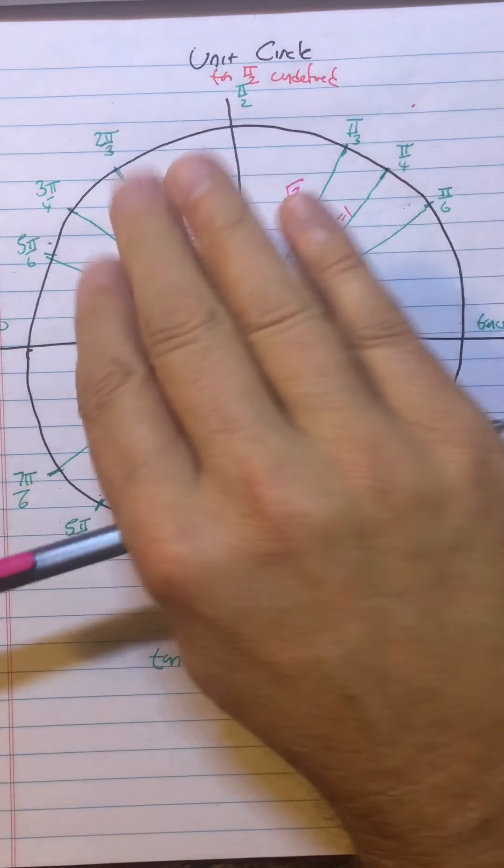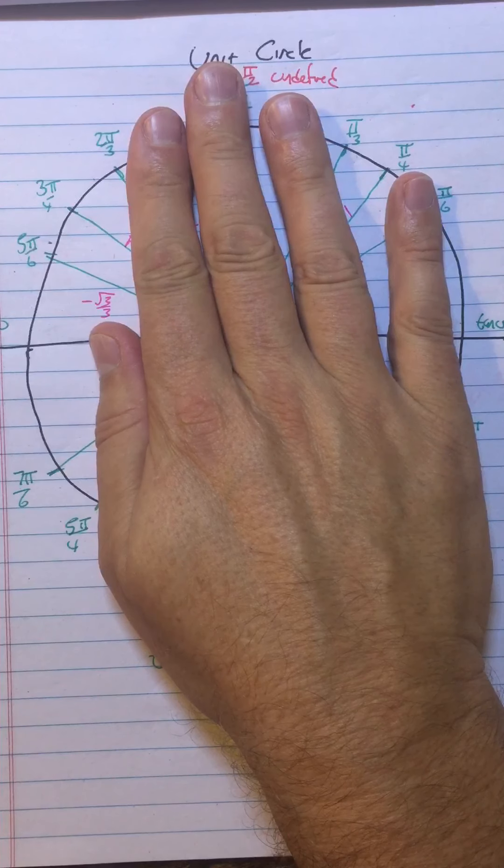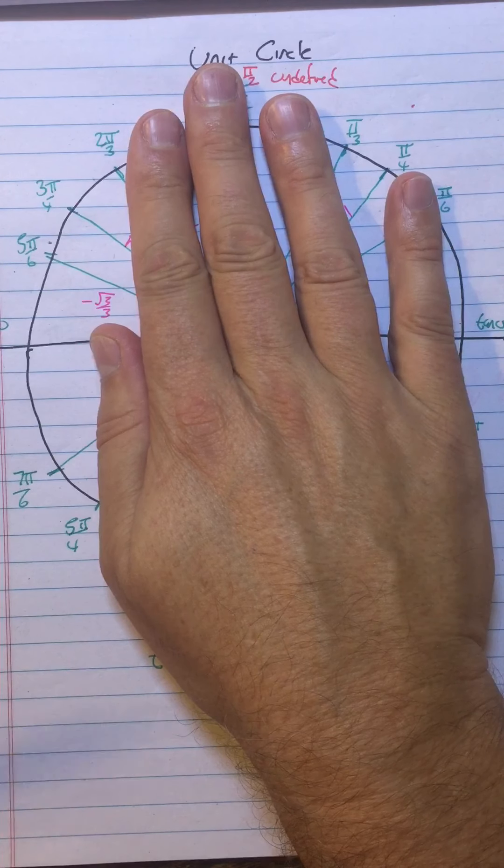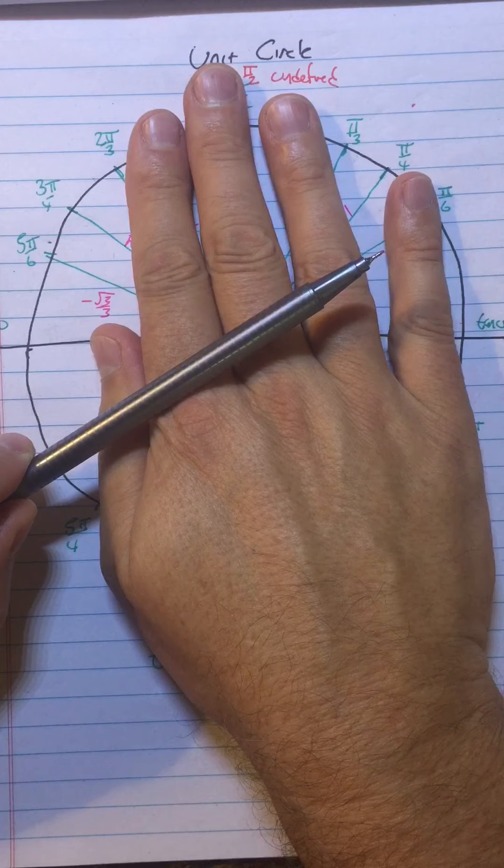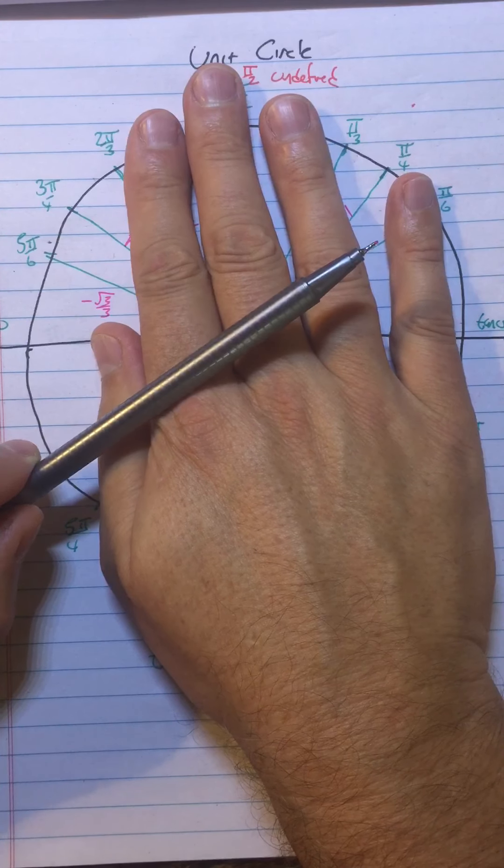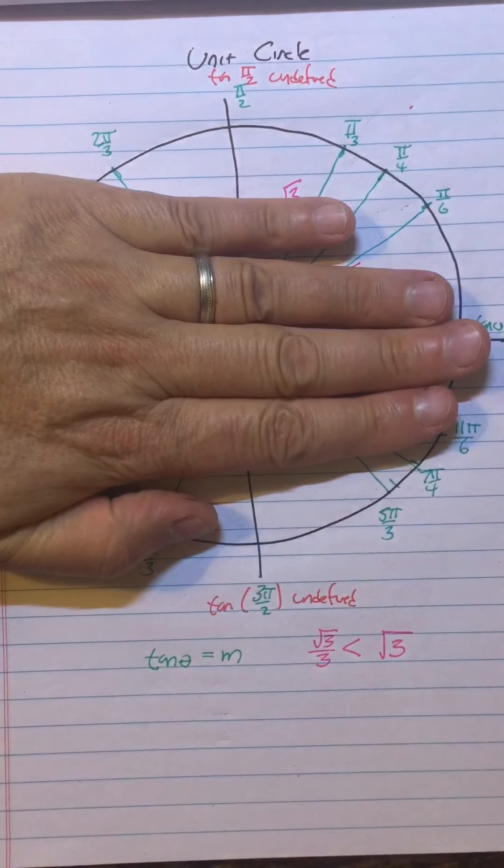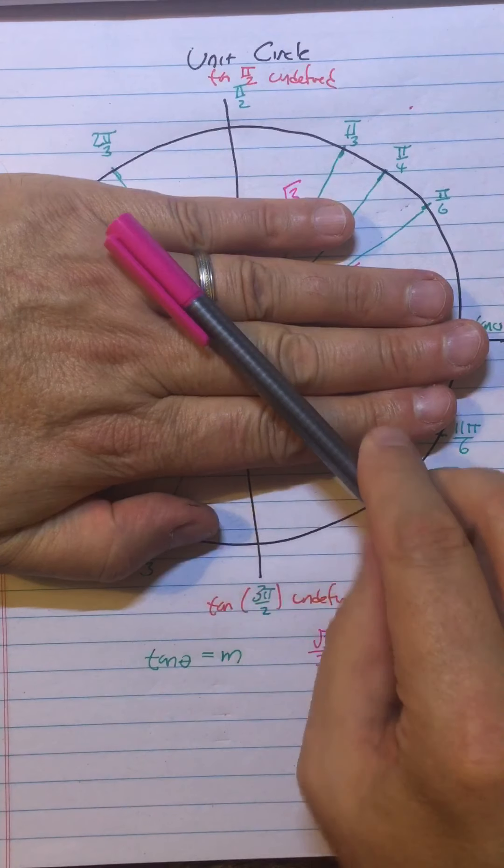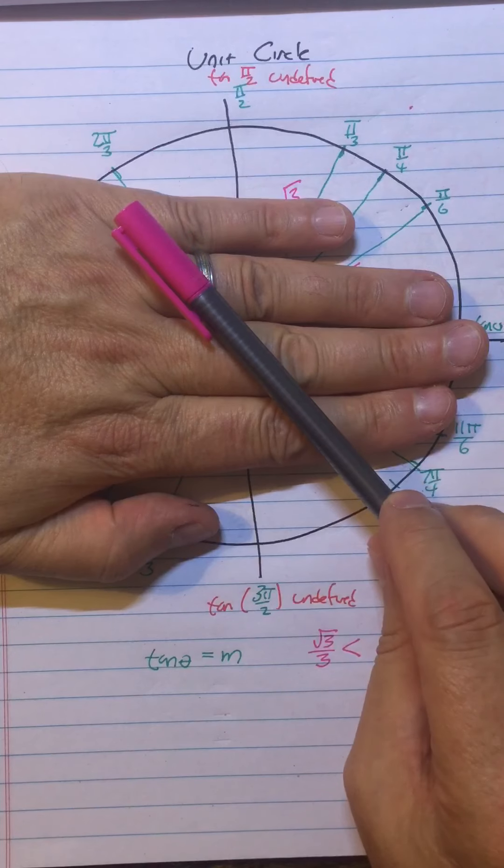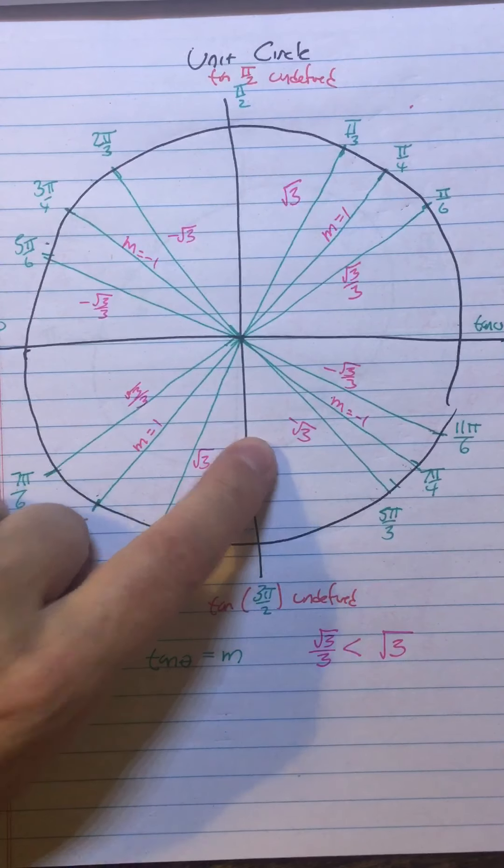So if somebody asked me, what's the tangent of 7π/6? I would say, oh well, it's a very slight slope going up, so it's √3/3. Boom. Somebody asked me, what is the tangent of 5π/3? Well, that's a steep slope, so it's √3. It's going down, so it's -√3.